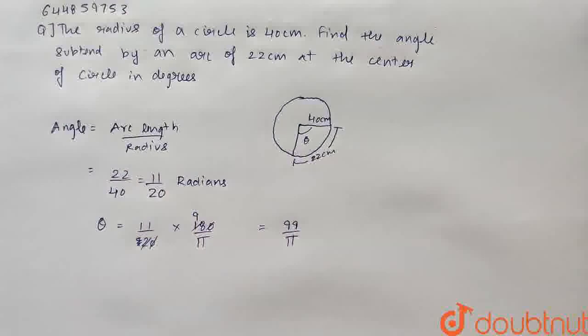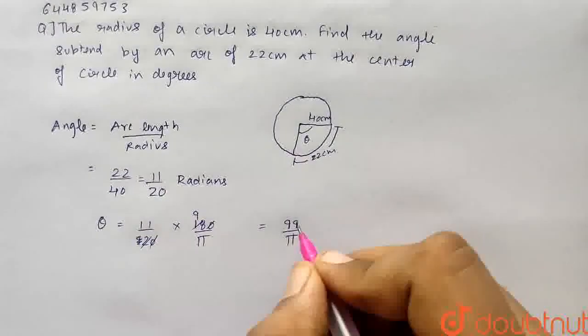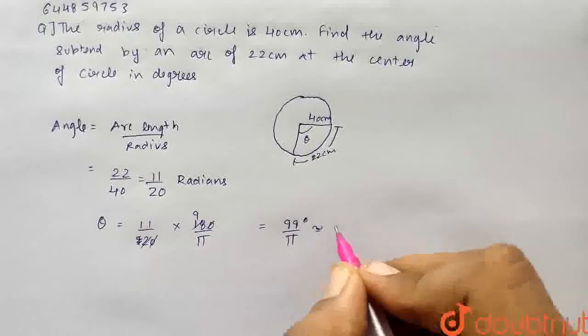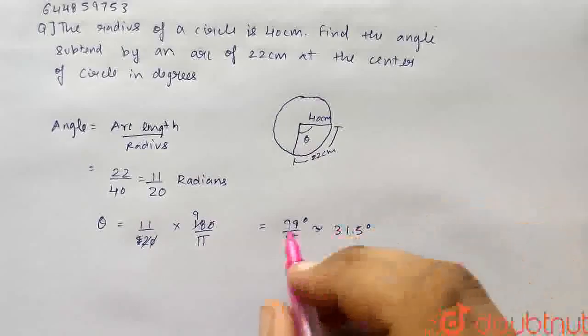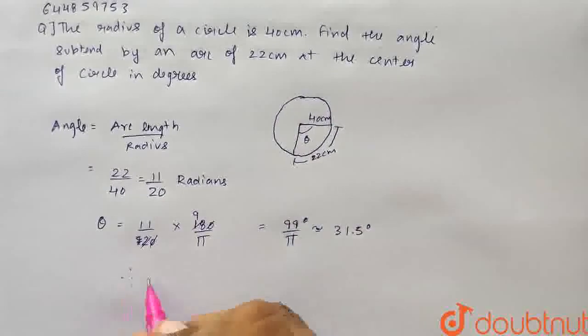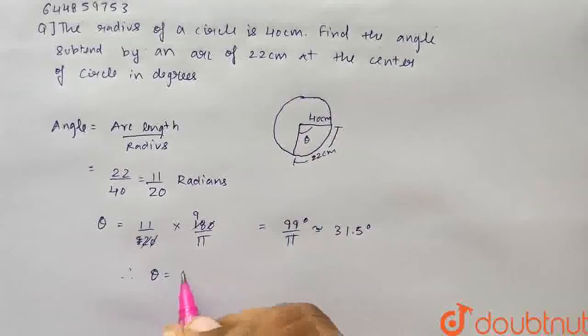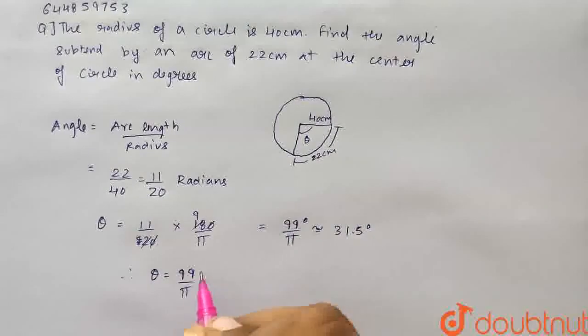Which will be approximately equal to 31.5 degrees. So this is the final answer. Therefore, the value of theta equals 31.5 degrees.